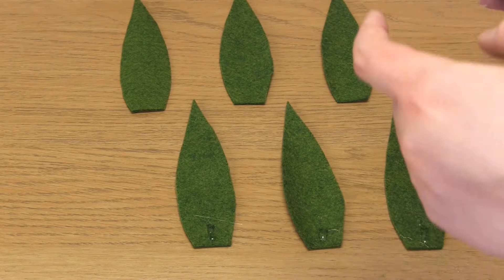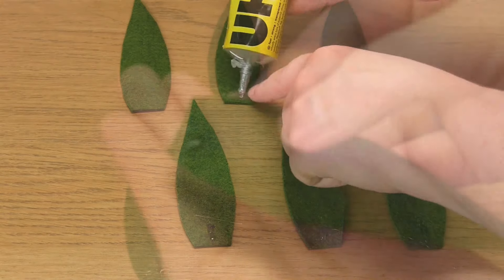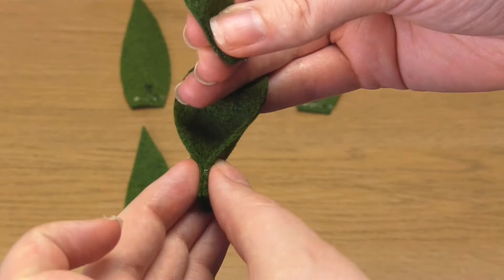Then add a little glue at the base of each leaf, and pinch the sides together to make them into 3D shapes.